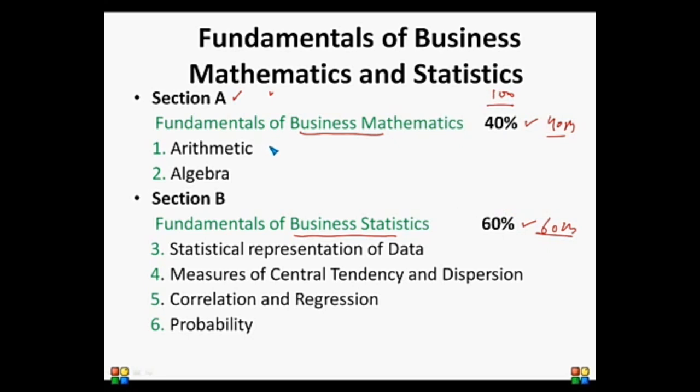Section A contains two topics: Arithmetic and Algebra. Section B contains four topics: Statistical representation of data, Measures of central tendency and dispersion, Correlation and regression, and Probability.